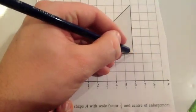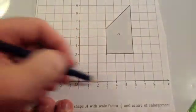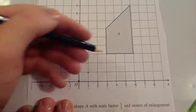Let's then look at this point, this vertex. So to get from the center of enlargement to this point, we would go 6 across and 3 up. So if you divide that by 3, you would go 2 across and 1 up.